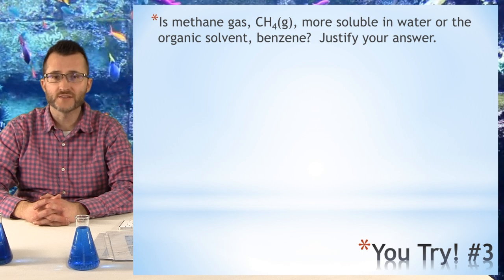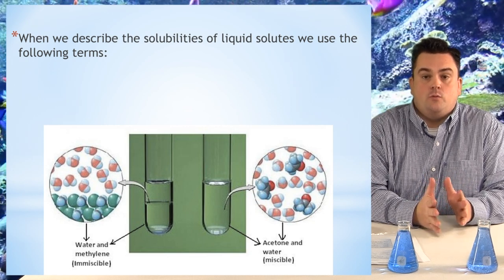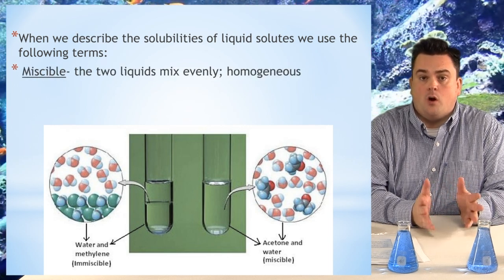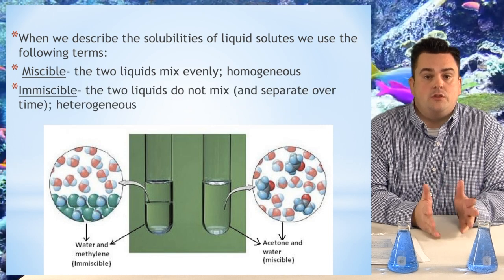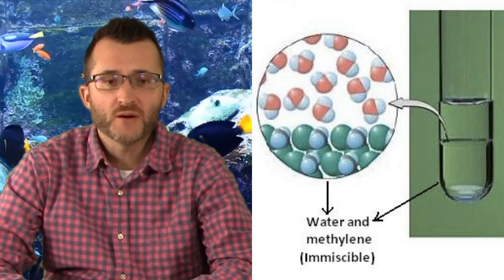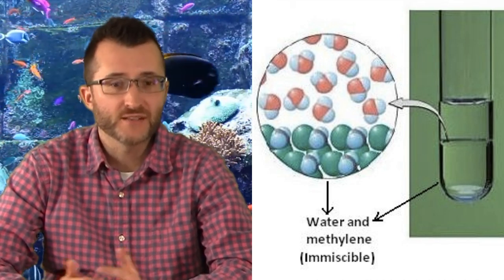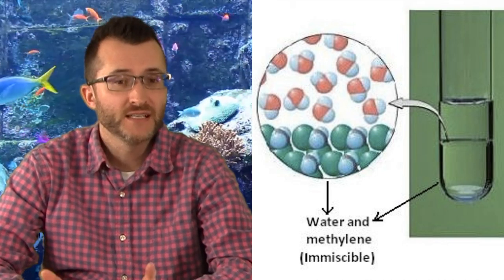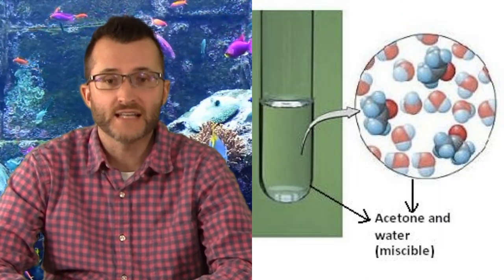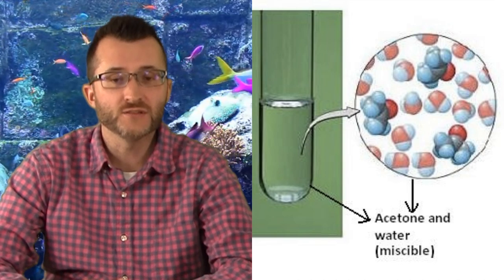When we describe the solubilities of liquid solutes, we use the following terms. Miscible — the two liquids mix evenly and are homogeneous. Immiscible — the two liquids do not mix and separate over time, which is heterogeneous. Looking at the picture, water and methylene form two separate layers, meaning they don't have similar polarities — water is polar, implying methylene is nonpolar, so they are immiscible. Acetone and water appear homogeneous with no layers, implying both are polar — they are miscible.